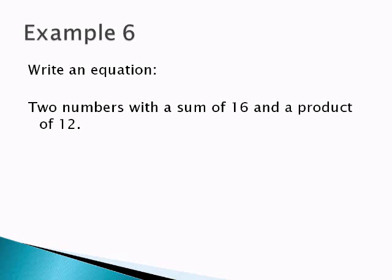Last thing we're going to look at in this short lesson is we're going to write an equation for this situation. Two numbers with a sum of 16 and a product of 12. So there's two things we have to satisfy at the same time. The sum is 16 and the product is 12. Well, let's start with the first part. Two numbers with a sum of 16. We know the first number is always x.